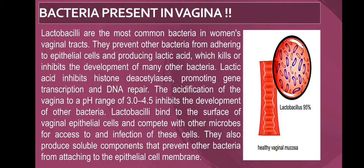An interesting fact about the vagina is that certain bacteria are present. Lactobacillus is the most common, constituting 95% of the bacteria. They prevent other bacteria from adhering to the epithelial cells by producing lactic acid, which kills and inhibits the development of other bacteria. This is carried out by acidification of the vagina to a pH range of 3 to 4.5, which inhibits the development of other bacteria.